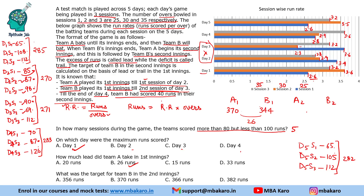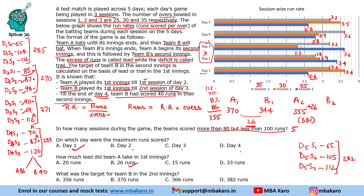The final question: what was the target for team B in the second innings? Team B had scored 40 runs by end of day 4. In day 4's session 3 (126 runs total), B scored 40 so A scored 86. Team A's second innings: 112 + 70 + 87 + 86 = 355 runs. With a lead of 26 runs, effectively A's second innings gives B a target of 355 + 26 + 1 = 382 runs.